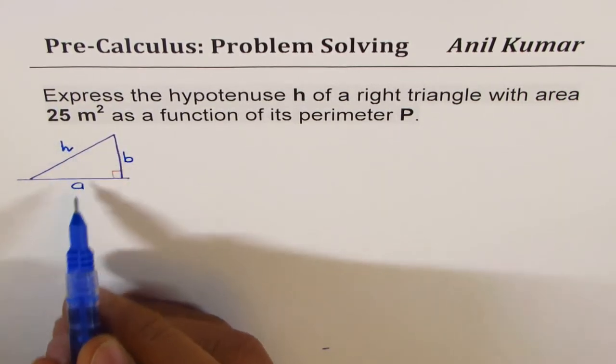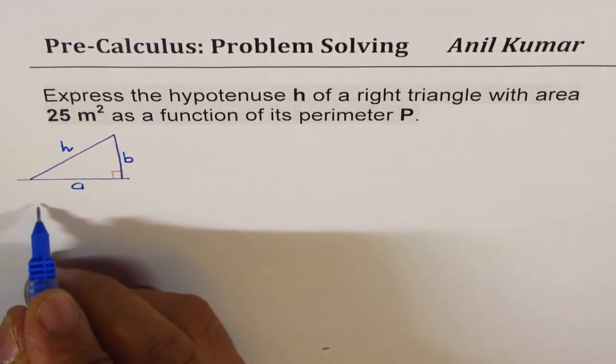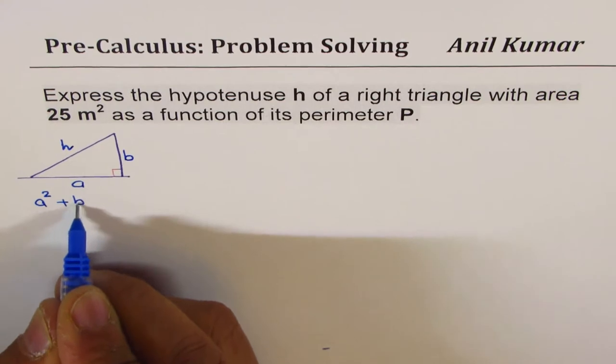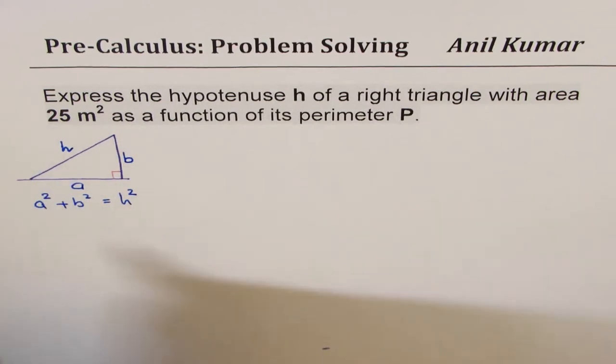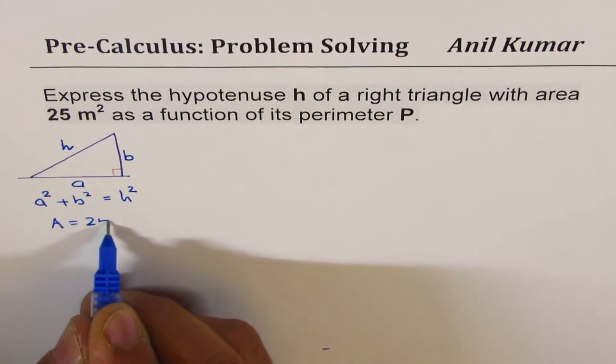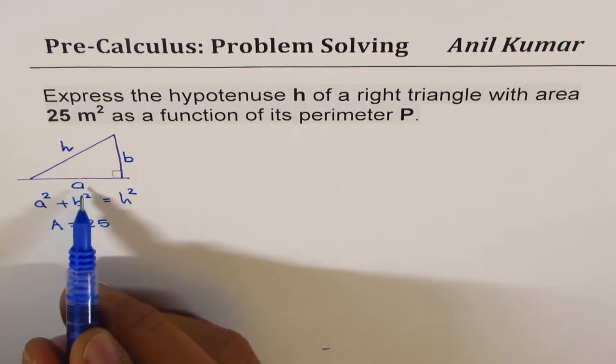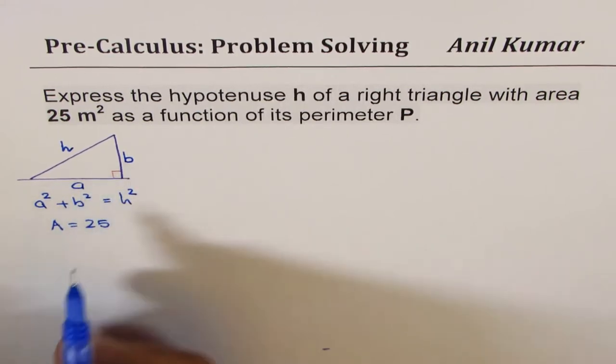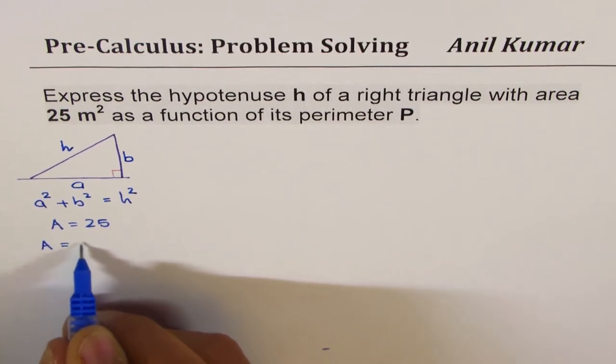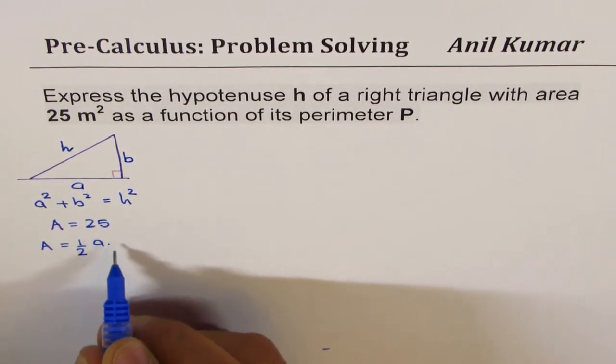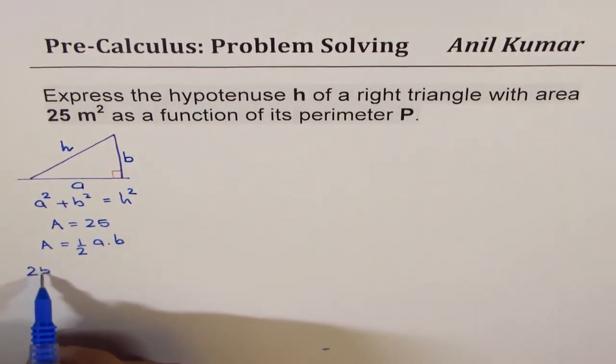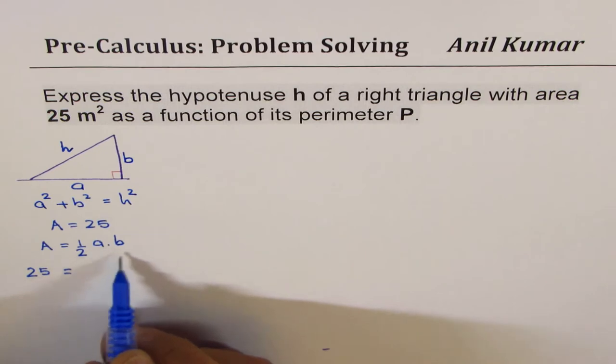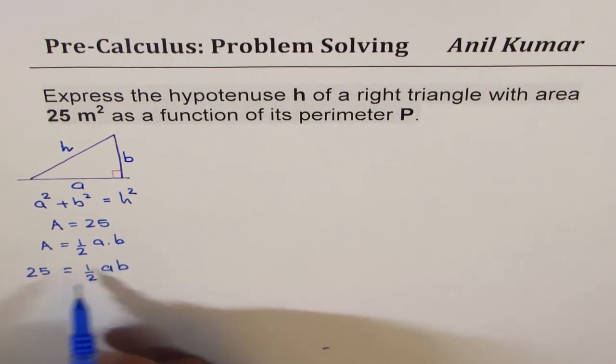From Pythagorean theorem, we can relate the sides with hypotenuse. So we can write a square plus b square equals to h square. We know the area is 25 meter square. Area equals to 25, and area can be expressed as half of a and b. So area is equals to half base, which is a, times height, which is b. So that gives us an equation relating the sides of the triangle, the shorter sides, as half of their product equals to 25.